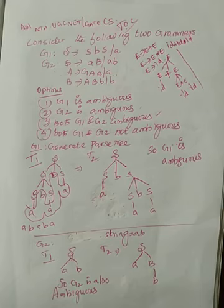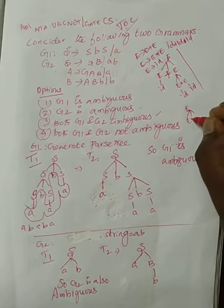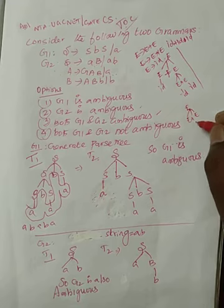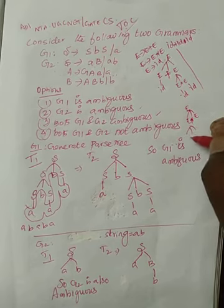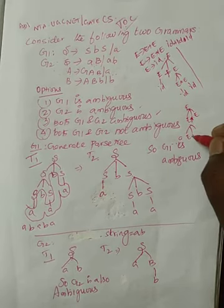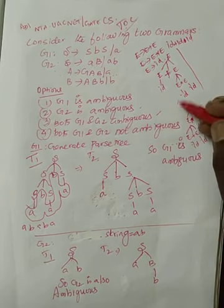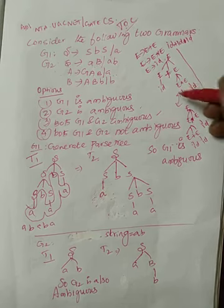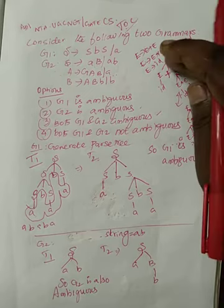And this is one look. Another thing is, E tends to E star E. And now, I can generate E tends to E plus E. Now, I can generate ID, ID, ID. Look at these two parse trees from the given grammar. Both are different looks, but generating the same string, ID plus ID star ID. Then, this is an ambiguous grammar.